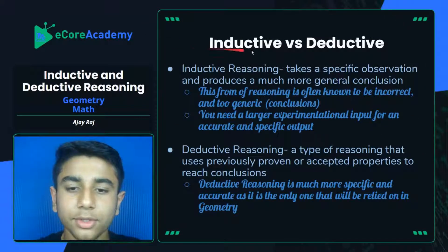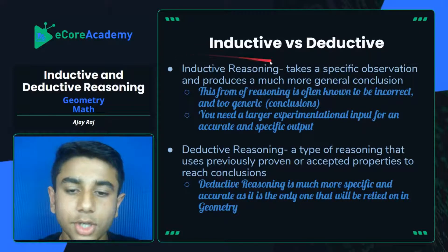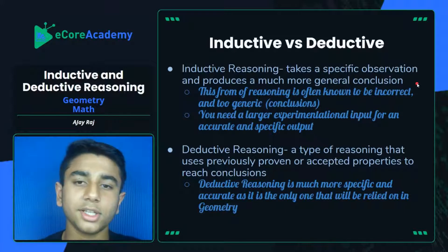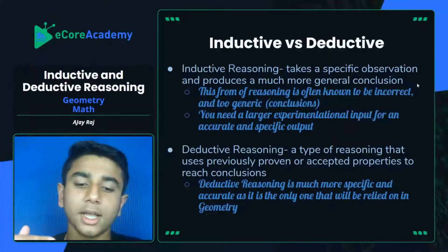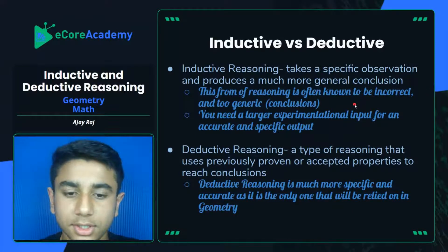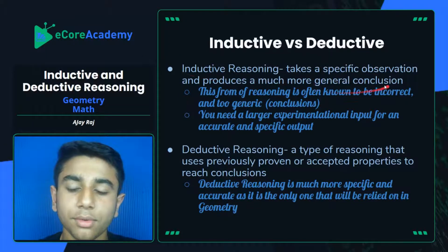Before we get into the meat of inductive and deductive reasoning, we need to first discover what they are and what gives them their differential properties. Inductive reasoning, as stated here, takes a specific observation and produces a much more general conclusion. Reasoning is when you take an observation, formulate a hypothesis, and then make a conclusion that applies to future situations and scenarios. It looks at a specific observation and produces a very general conclusion.